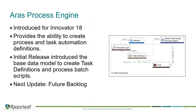Following that is the Eris process engine, initially introduced for Innovator 18. The introduction of the process engine allows us to create automated processes and task automation definitions. With the initial release, Eris introduced the base data model to create task definitions and process simple batch scripts. On their future backlog, there is a lot more that Eris intends to do with the process engine, and we look forward to getting that information out as soon as we can.